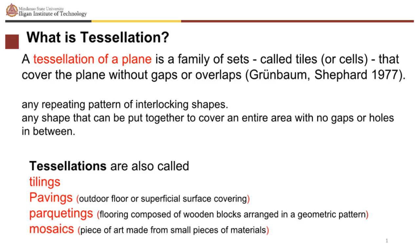Tessellations are also called tilings, pavings — outdoor floor or superficial surface coverings — parquetings, which are flooring composed of wooden blocks arranged in a geometric pattern, and mosaics, which are pieces of art made from small pieces of materials.